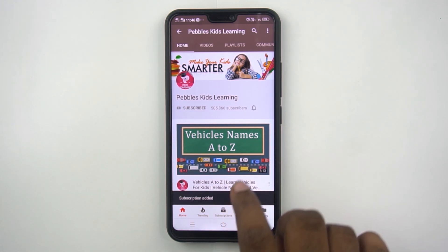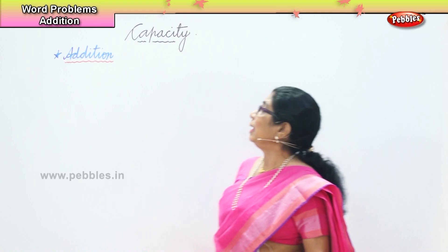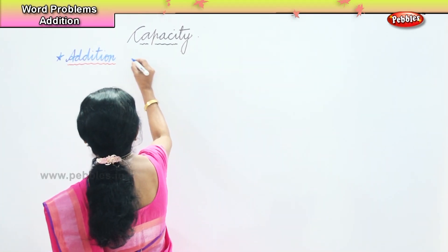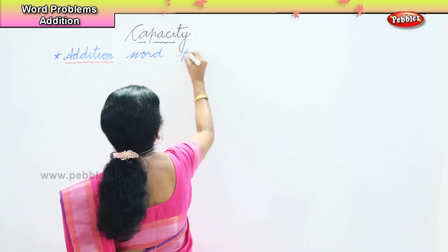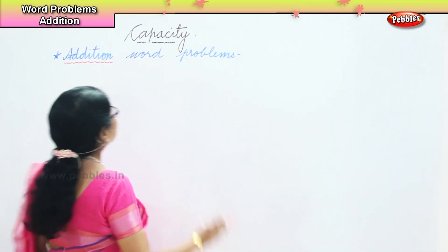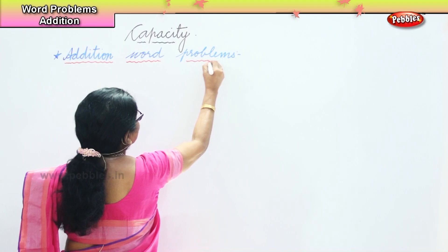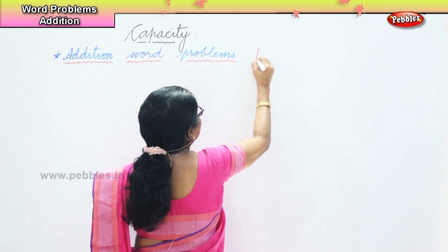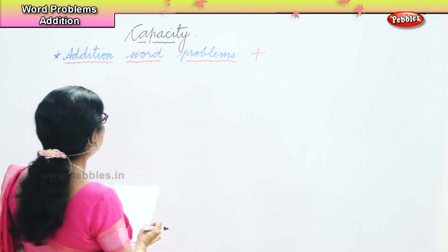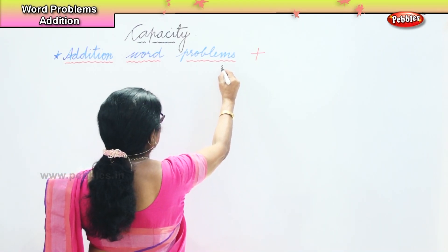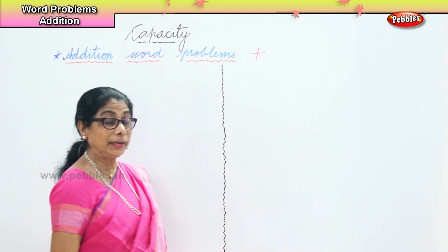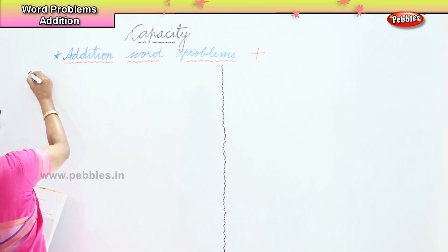Please subscribe to our channel and for latest updates click on the bell icon. In this capacity lesson, let's do addition word problems. A couple of problems will help us in framing the statements, arranging the numbers, and all that. We are going to do addition word problems. I will write out the problem, then you will see how to arrange the numbers and how to frame our statements.